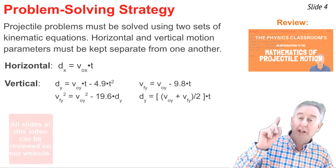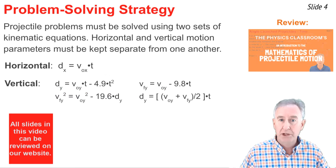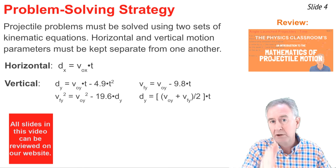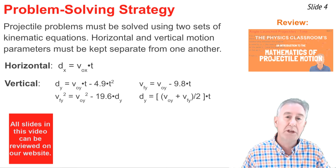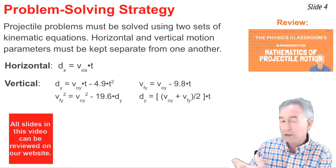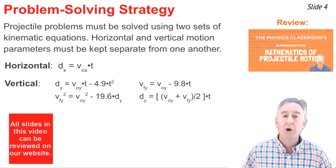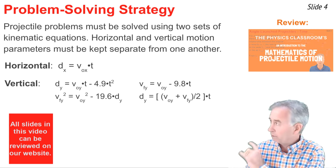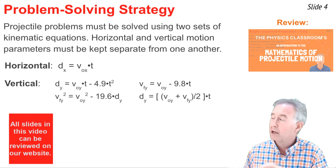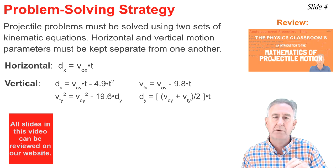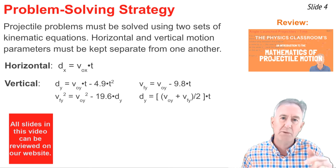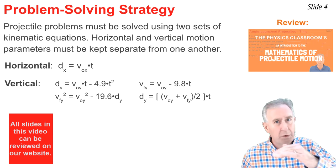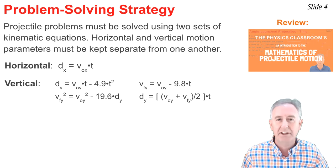In a previous video, we discussed the mathematics of projectile motion. The horizontal motion of a projectile is independent of the vertical motion, so we derive two sets of equations: one for horizontal motion and one for vertical motion. The horizontal set has just one equation we'll ever use, while the vertical set has four equations. The subscripts x and y after variable symbols indicate the horizontal or vertical component respectively.